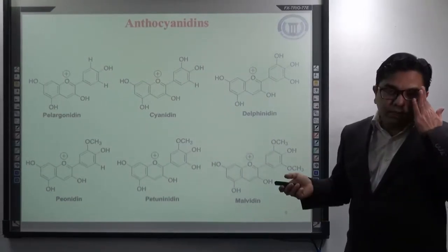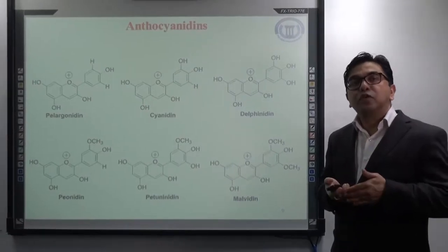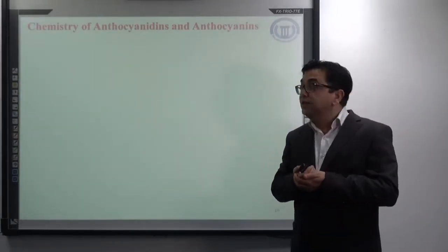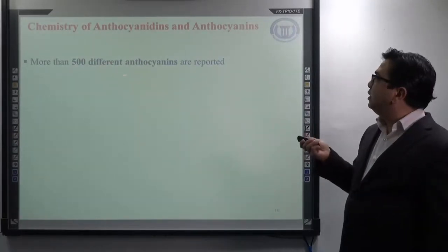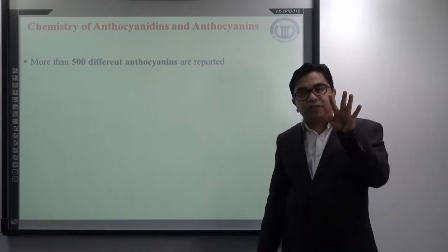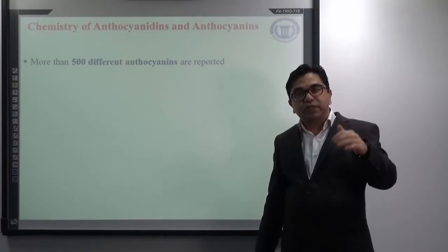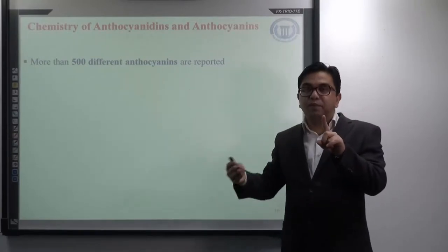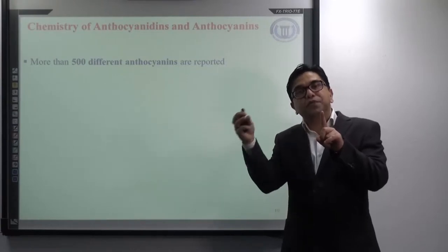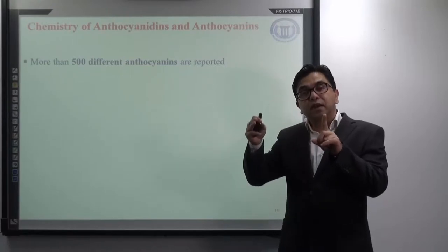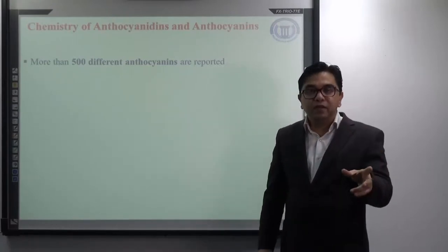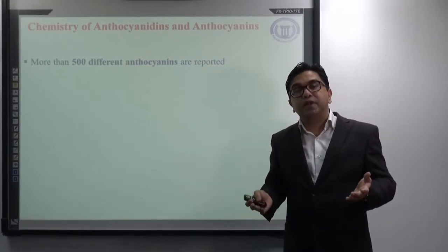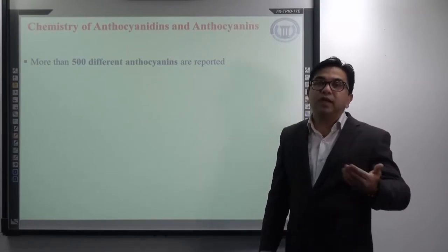Continuing with the chemistry of anthocyanins and anthocyanidines: so far more than 500 different anthocyanins are reported. Even though only 23 anthocyanidines are reported, based on one aglycone there can be many glycosides — that is, many anthocyanins — based on the type of the sugar attached, the number of sugars attached, and the position at which sugars are attached to the anthocyanidine. So one anthocyanidine can be present in nature in the form of various anthocyanins based on type, number, and position of sugar attachment.